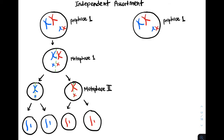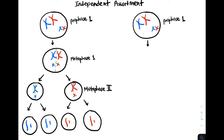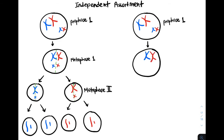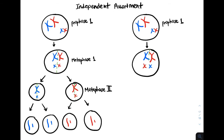Now that is one way in which the chromosomes can segregate, but let's look at this other way. Again, after prophase 1, we have metaphase 1. But let's suppose that this time we have one pair of homologous chromosomes that has blue on the left and red on the right, and the next pair has red on the left and blue on the right. They still line up at the metaphase plate during metaphase 1.